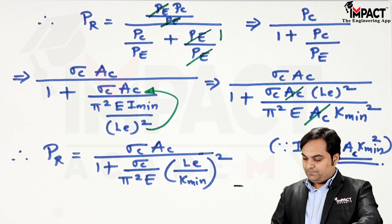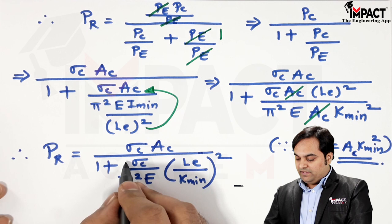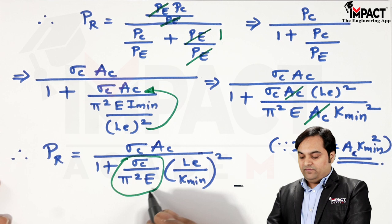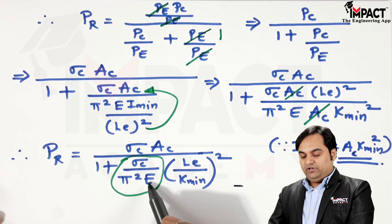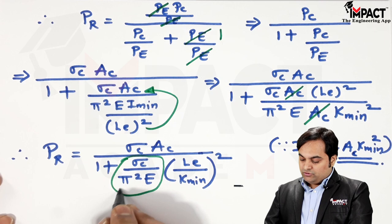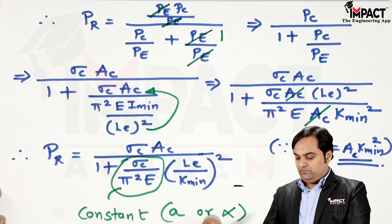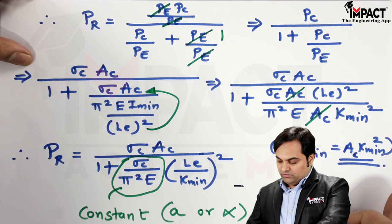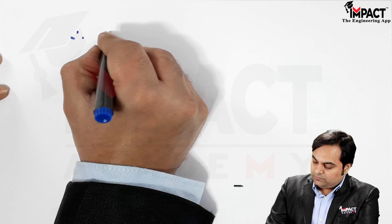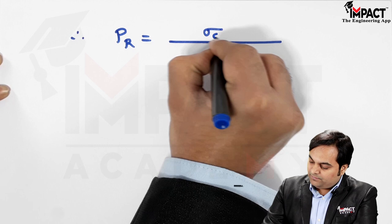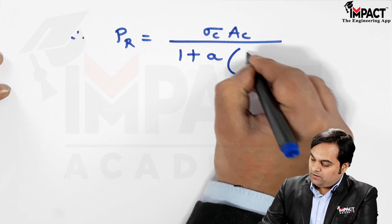The term σ_c / (π²E) has no units — since σ_c is in N/mm² and Young's modulus E is also in N/mm², they cancel out, and π is dimensionless. So this term is a constant, which we can call 'a' or 'α'. Therefore, the final Rankine's formula is: P_r = σ_c·A_c / (1 + a·(L_eff/k_min)²), where a = σ_c/(π²E) is Rankine's constant.